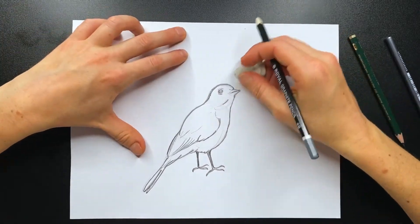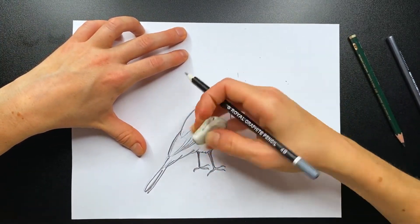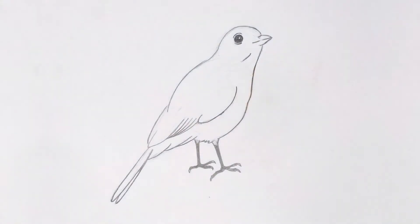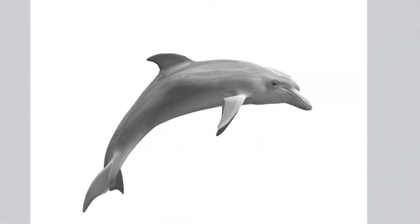Clean up your drawing with eraser and you will end up with a drawing of a bird looking like this. Now let's move on to the drawing of a dolphin.